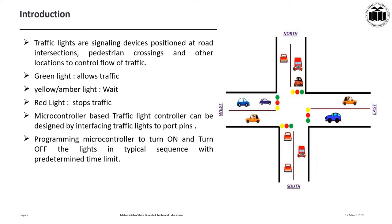Traffic lights are signaling devices positioned at road intersections, pedestrian crossings, and other locations to control the flow of traffic. There are three colors used: red, yellow, and green. Green indicates that traffic is allowed to flow; yellow or amber indicates that vehicles must wait for the change of signal; and red indicates that vehicles must stop. A microcontroller-based traffic light controller can be designed by interfacing the traffic lights on each direction to the microcontroller through its port pins, and then programming it to turn on and off the lights in a typical sequence with a predetermined time limit.